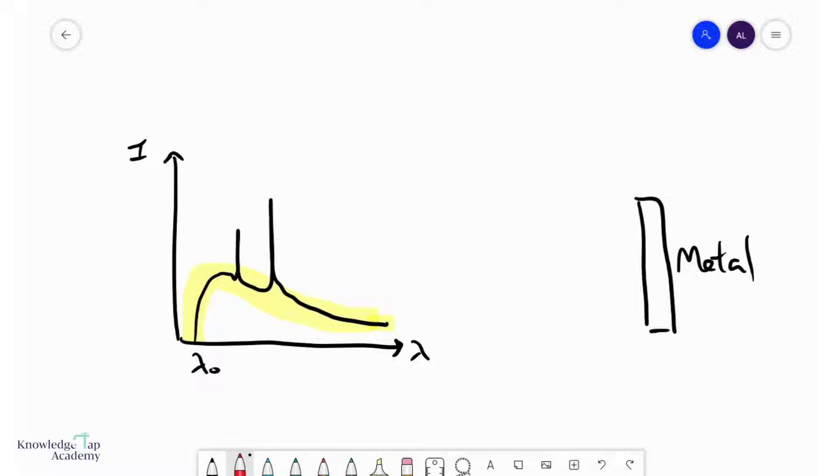So this curve is called the continuous spectrum. So how does this continuous spectrum come about? Now remember you are bombarding this metal with a high amount of these high speed electrons.